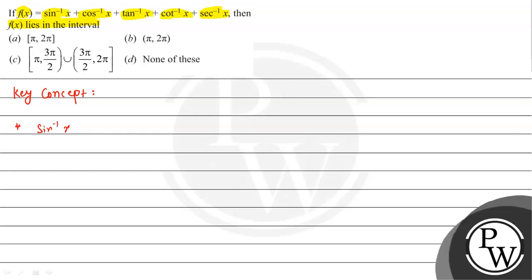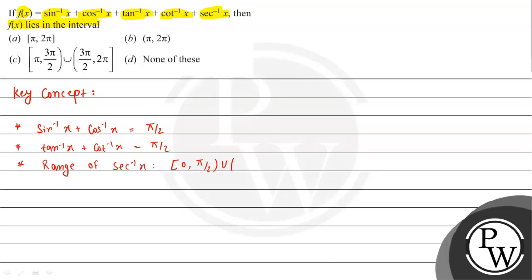The second concept we will use is tan inverse x plus cot inverse x is equal to π/2. The third concept is the range of sec inverse x, which is from 0 to π/2, and then union π/2 to π.